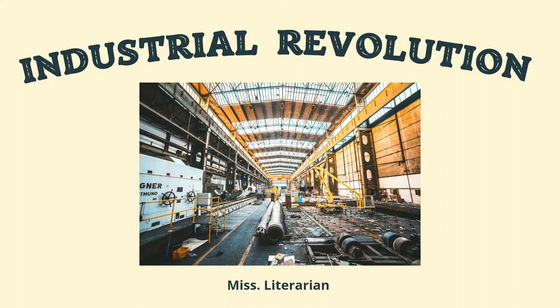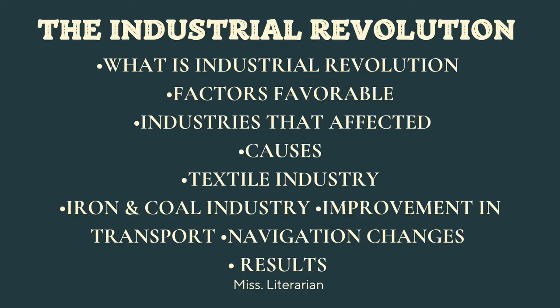In this video, let's learn about the industrial revolution. We'll begin with what is meant by the term industrial revolution, then we'll see factors favorable in England for industrial development, then the industries affected by the revolution: textile industry, iron and coal industry, implements and means of transport, and changes that occur in navigation.